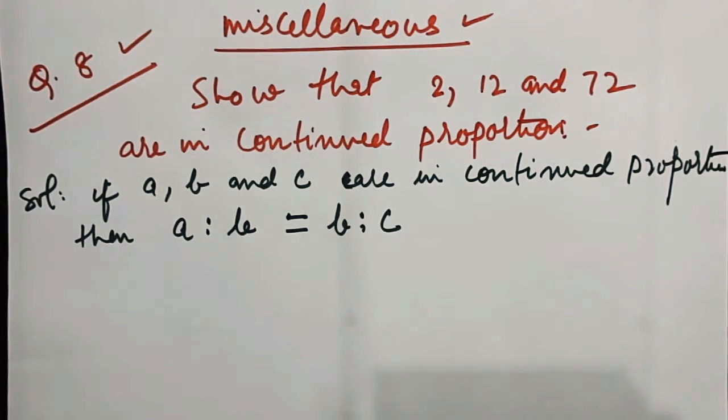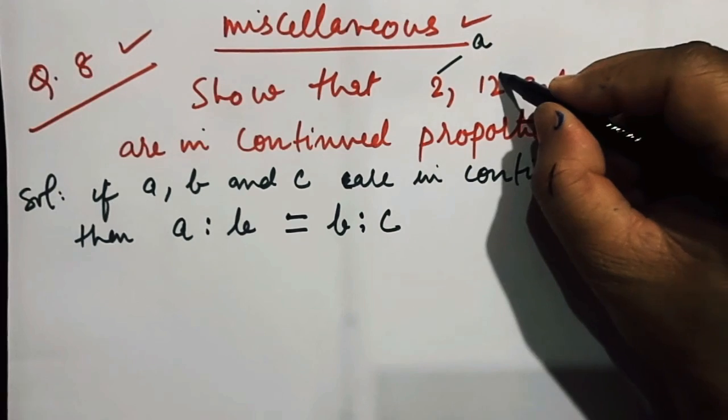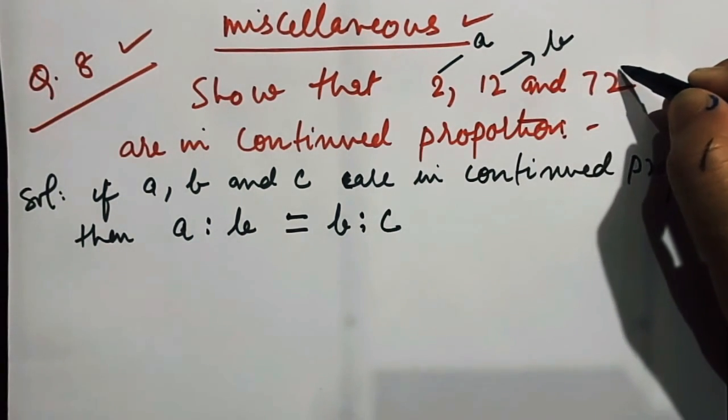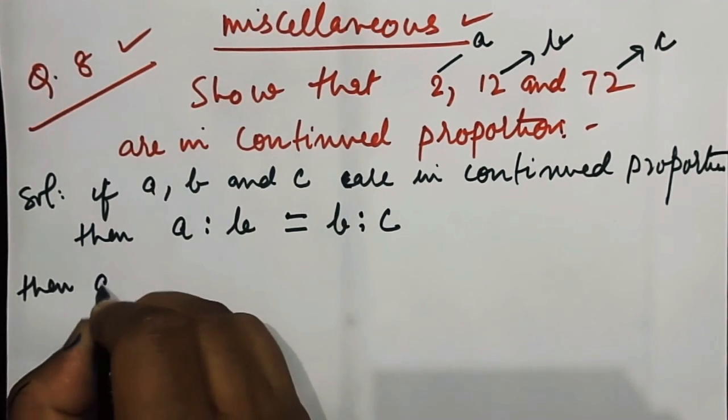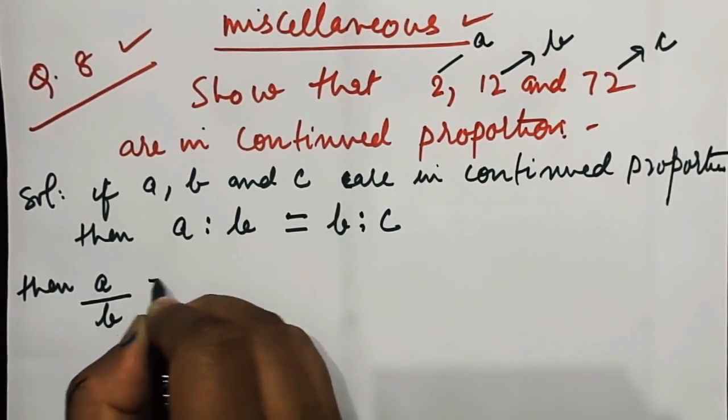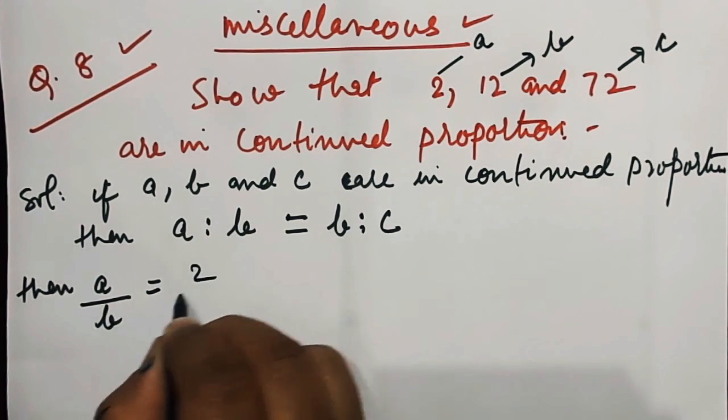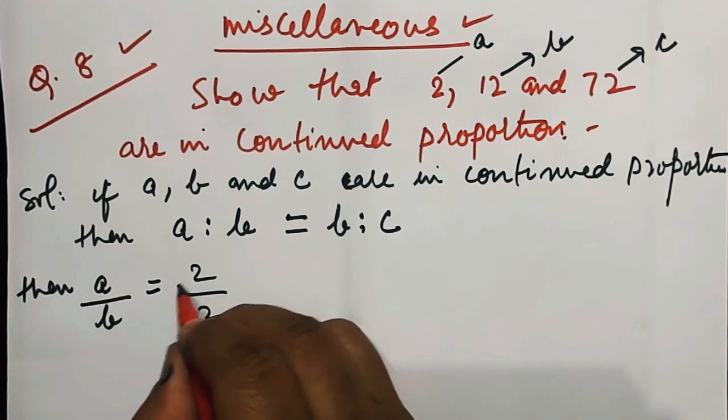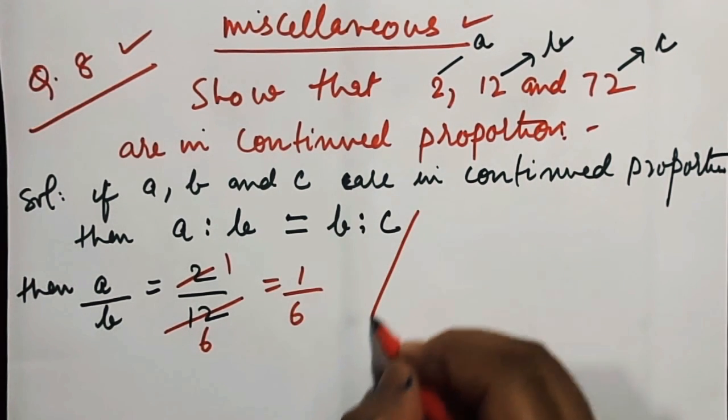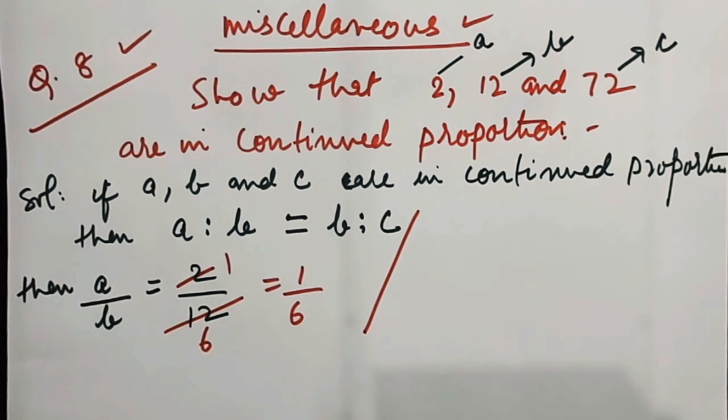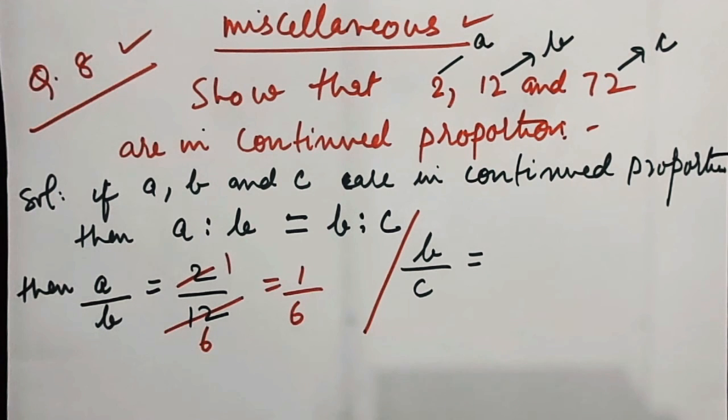Here, if I take 2 as A, 12 as B, and 72 as C, then A by B will be equal to 2 by 12, and on cancellation, is equal to 1 by 6.